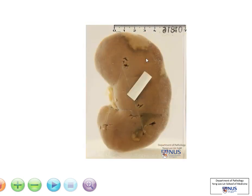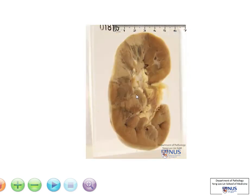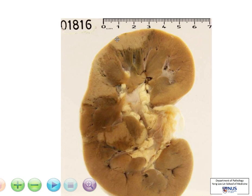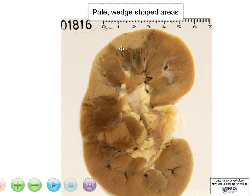And when we turn this around, we can see the capsular surface. There are some areas of abnormality. These are focal areas, and what we can see are that they are pale, wedge-shaped areas of discoloration, with the broad edge of the wedge abutting against the renal capsule.